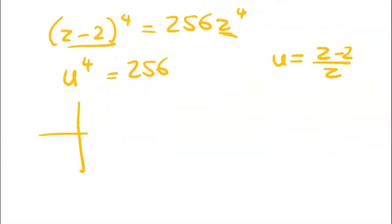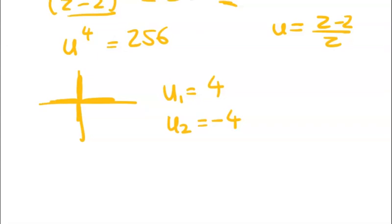Now straight away we know that the four solutions to this are going to be evenly spaced around the circle. So we get u1 is equal to 4, u2 is equal to negative 4 and then so that's this one here and this one here. Now working in order which I should have done is we get u3 is equal to 4i and u4 is equal to negative 4i.